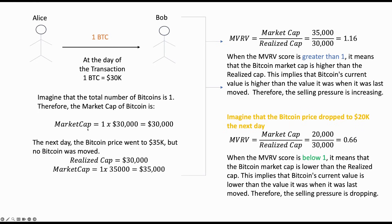The next day, the Bitcoin price increased and it's now worth $35,000. But Bob still holds the Bitcoin he received from Alice and no transaction was made on the Bitcoin blockchain. So the realized cap of Bitcoin is still $30,000, as no Bitcoin moved. But the market cap of Bitcoin is now $35,000, as the market price has increased.